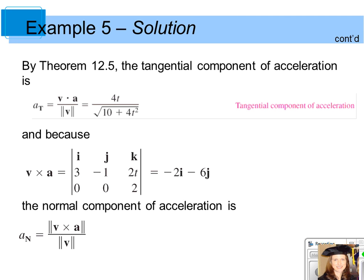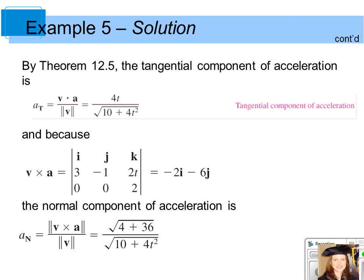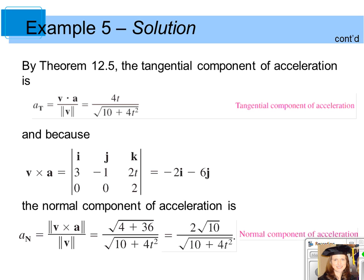To find the normal component of acceleration, you can use the formula that is the magnitude of the cross product of the velocity with the acceleration. The cross product of those would be negative 2i minus 6j. The normal component of acceleration is found by taking the magnitude of the cross product and dividing by the magnitude of the velocity vector valued function, which simplifies to 2 square root of 10 divided by the square root of the quantity 10 plus 4t squared. That's the normal component of acceleration.